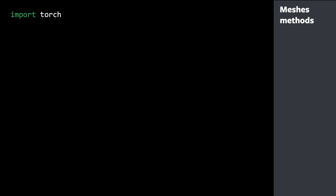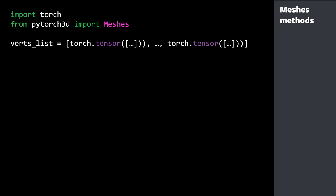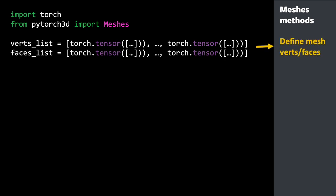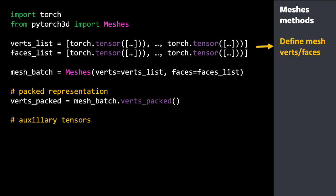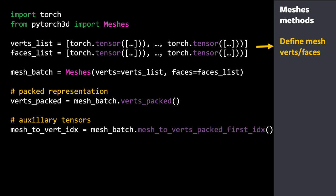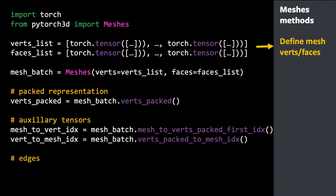Here's a code example using the Meshes data structure. We import PyTorch and Meshes from PyTorch3D, initialize vertices and faces as lists of tensors, then create a batch by passing these into the Meshes constructor. To obtain the packed representation we simply call verts_packed on the batch object, and we can access auxiliary tensors and other mesh properties such as edges, which are computed internally.